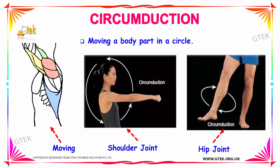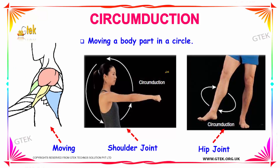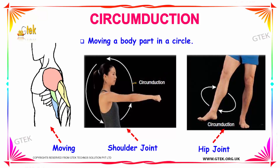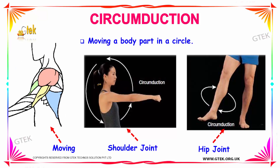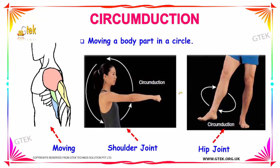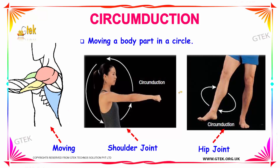Our next movement is circumduction. If you move a body part in a circle then it is known as circumduction. Some examples are your shoulder joint and your hip joint. Rotating your arms is known as circumduction. Similarly if you rotate your feet or your leg it is also known as circumduction.